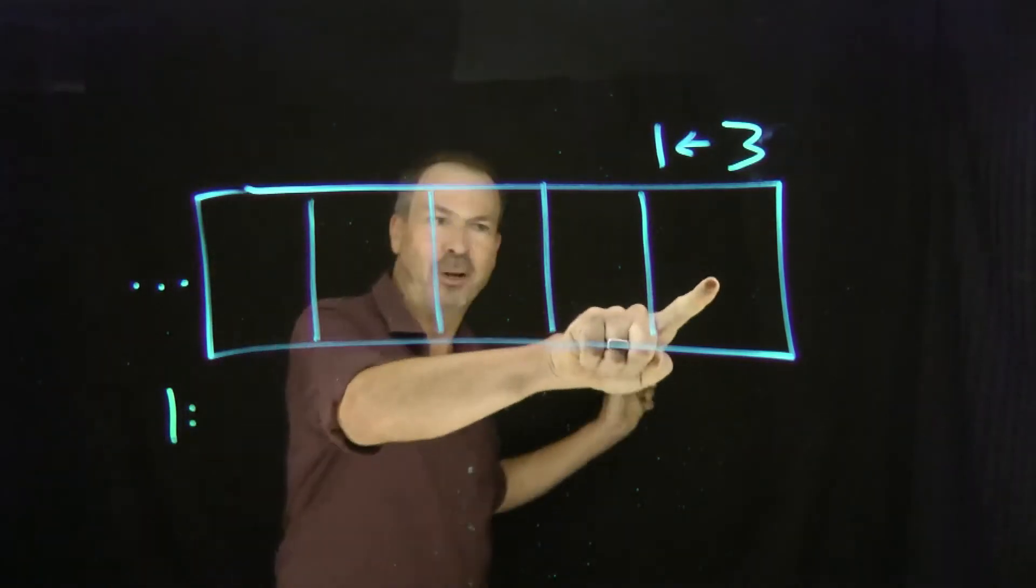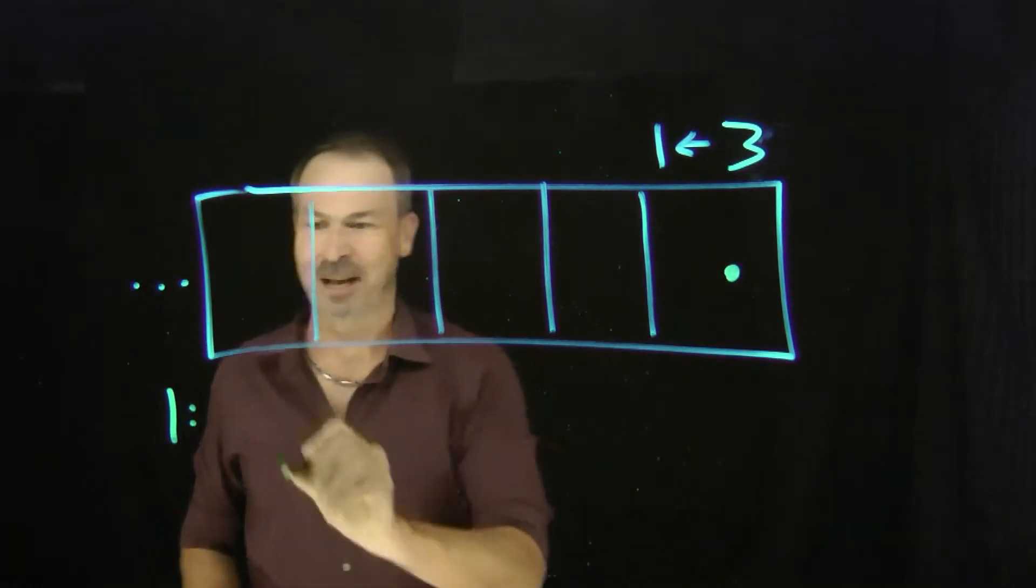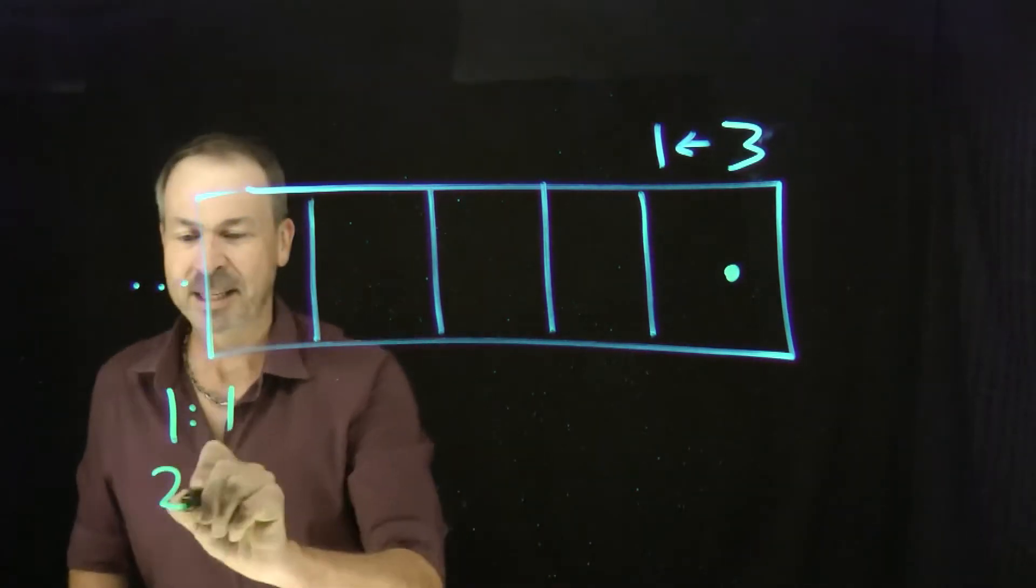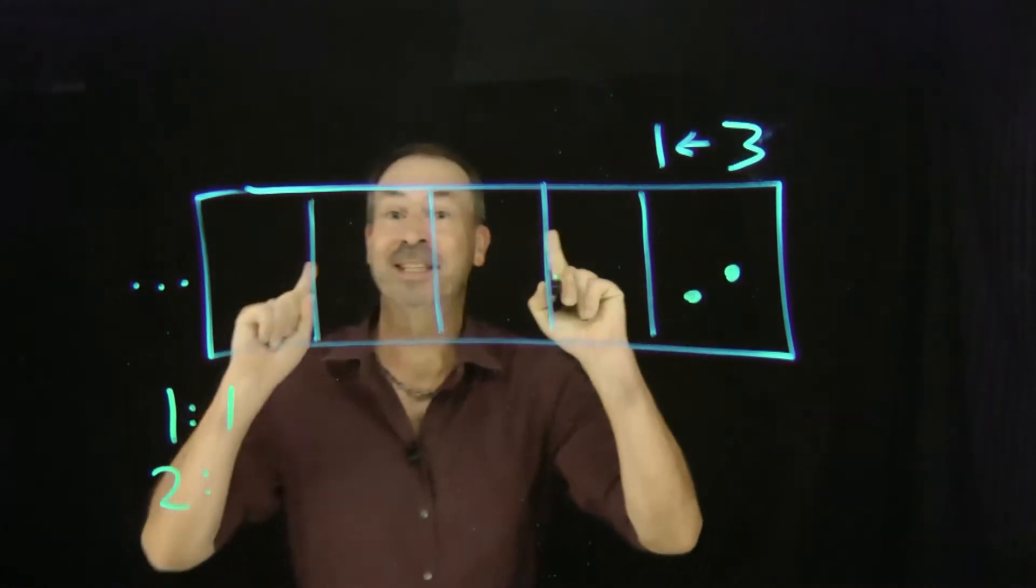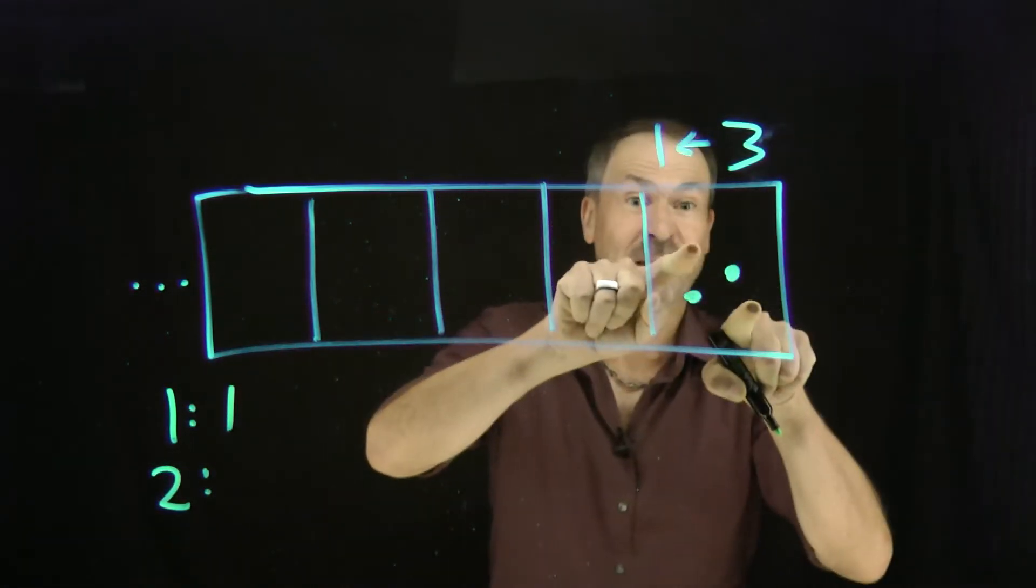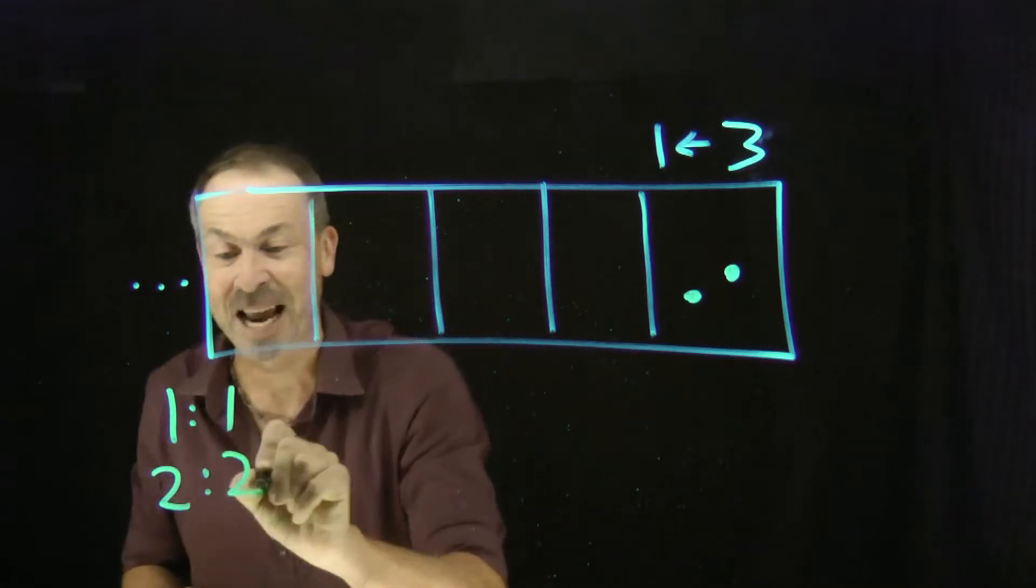Put in one dot, always the rightmost box. Not very exciting, it stays as one dot. Put in a second dot in the machine, always the rightmost box. Here it comes. Oh, but it stays this way. I now need three dots to explode. Nothing happens yet, it stays as two dots.